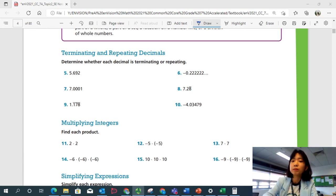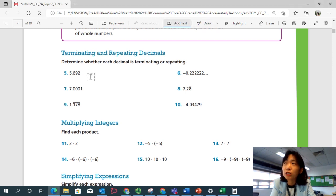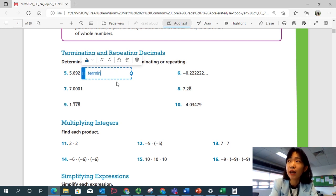Okay, are you ready? What is number 5? 5.692. It ends at 692. And it doesn't have any dots like that, so it doesn't continue. So you can see that there are invisible zeros after the last digit. So this is terminating decimal. It ends. Terminating.